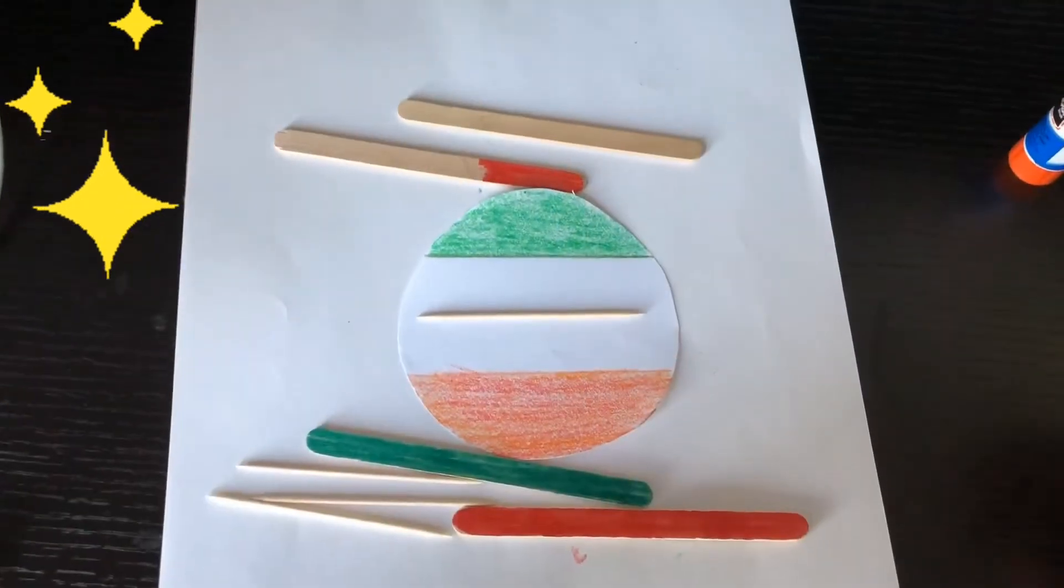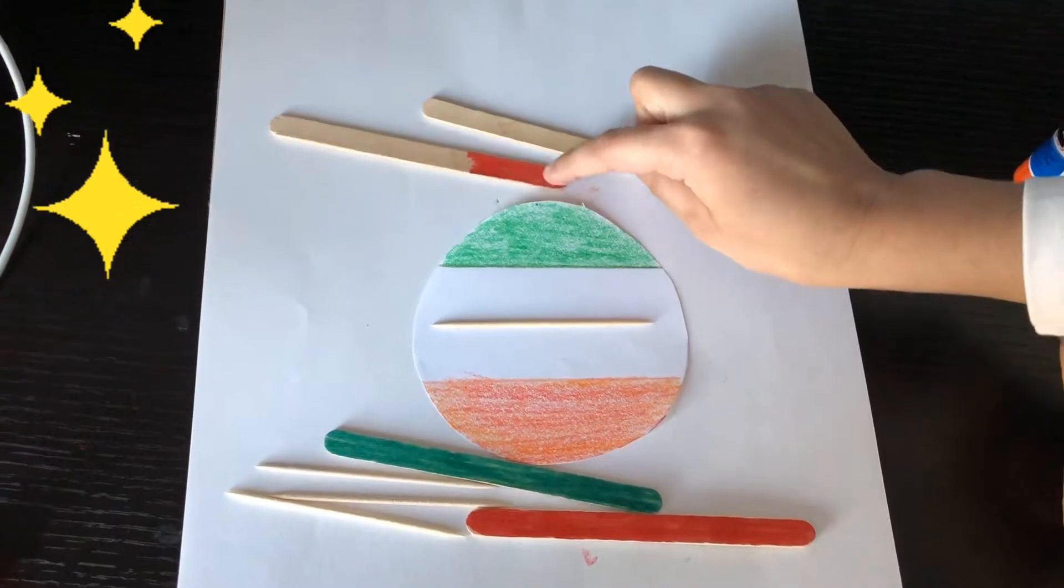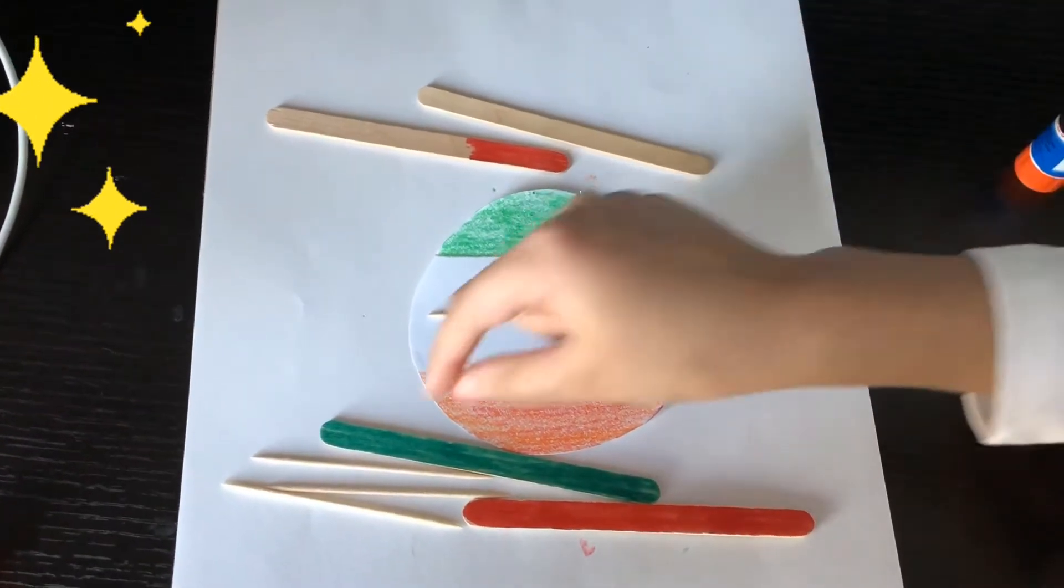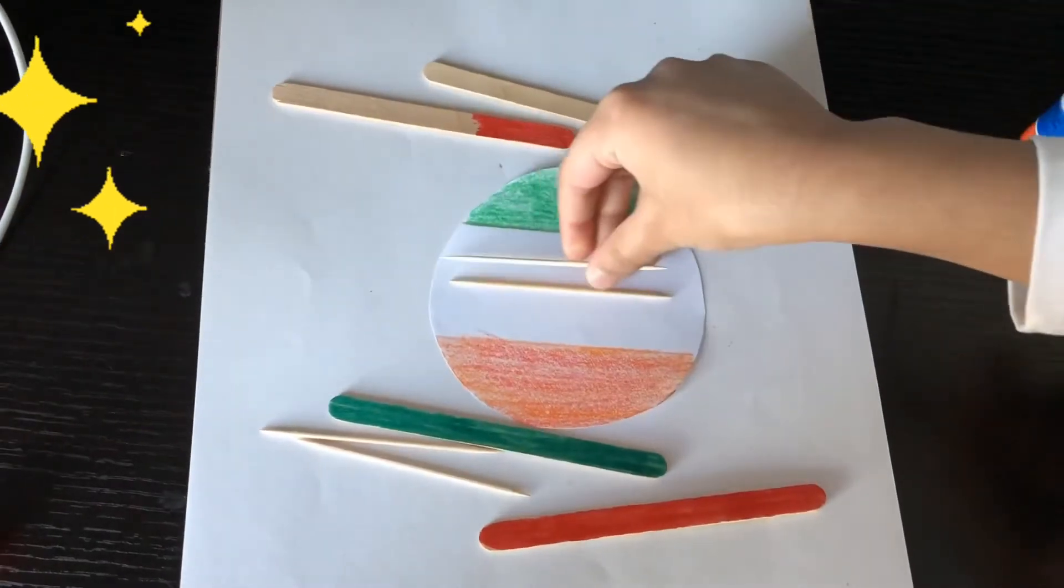So now you need four popsicle sticks and color them in any color and you need some of these to stick like this.